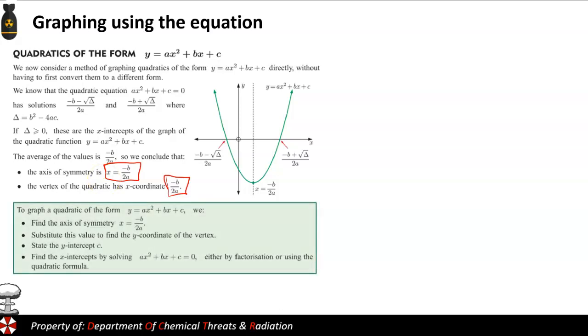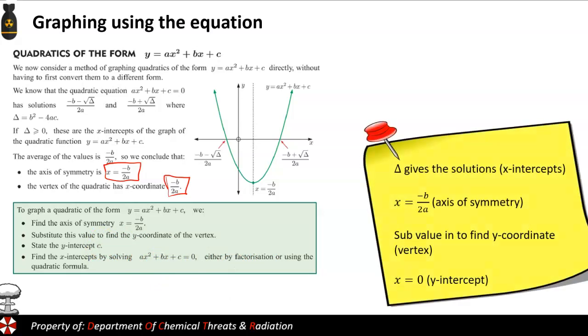So to summarize these things, we've got a couple of things. If we want to graph a quadratic in the normal form, we first find the axis of symmetry, which is -b/2a. We then substitute the value in to find the y-coordinate. So substitute this as x, what is y? Then we can state the y-intercept. From there, we can find the x-intercepts by solving the normal equation. Now that we know what the y-intercept is, we can either use factorization or we can use the quadratic formula. So to summarize, the discriminant gives us the solutions, the axis of symmetry, the x-value, is -b/2a. We sub that in to find the y-coordinate, which is the vertex. And we can use that when x = 0, we can find the y-intercept.